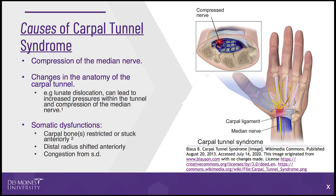The causes of carpal tunnel syndrome are multifactorial but is generally a compression of the median nerve. Changes in the anatomy of the carpal tunnel, such as a lunate dislocation, can lead to increased pressures within the tunnel and compression of the median nerve.